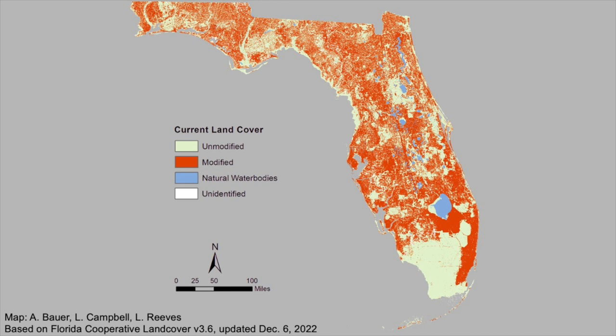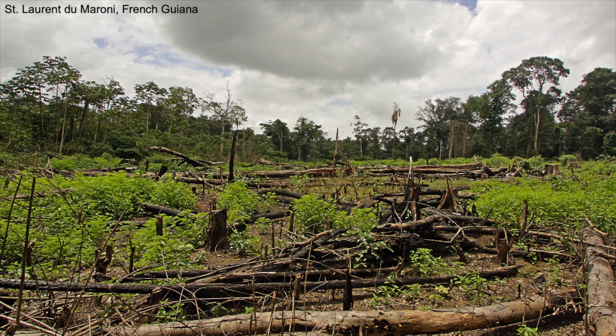Most worrisome is that these land cover changes are ongoing — this isn't an end point for Florida's land cover change. Just a few weeks ago, Florida was reported to be the state with the highest population growth in the country for the first time in decades, which doesn't bode well for the future. Even more troubling, this sort of thing is happening around the world to varying extents, while climate change further complicates the situation. Most concerning is the situation in the tropics, whose tropical forests support the majority of life on the planet while storing tremendous amounts of carbon.